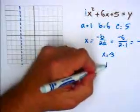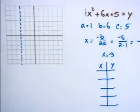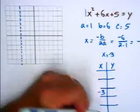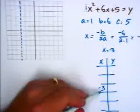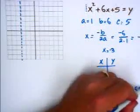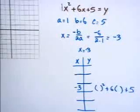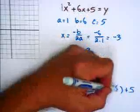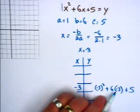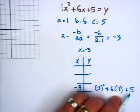Now we're going to find a few points to plot — x and y. We're going to start with the vertex or line of symmetry and put that in the middle. So we know the equation is x squared plus 6x plus 5, and x is going to be negative 3. Negative 3 squared is 9. 6 times negative 3 is negative 18, plus 5. 9 plus negative 18 is negative 9. Negative 9 plus 5 is negative 4.